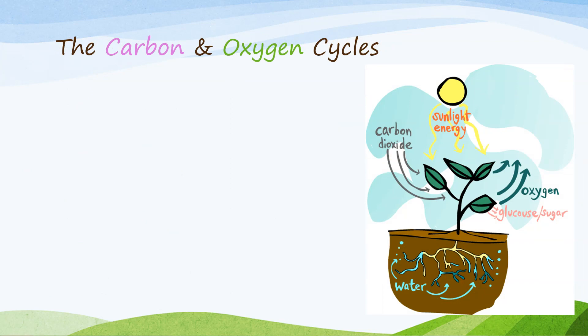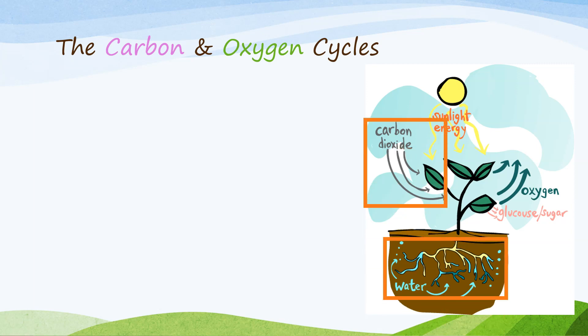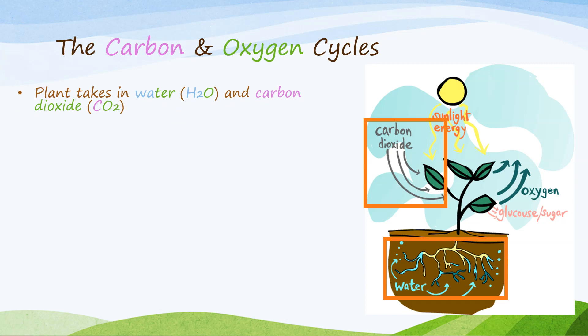Let's talk about plants. Plants photosynthesize to make their food, which is glucose or sugar. Plants need a few things in order to photosynthesize: water, sunlight, and carbon dioxide. The plants take in carbon dioxide and sunlight through their leaves and water through their roots, and use them during photosynthesis to produce two things: oxygen and glucose.